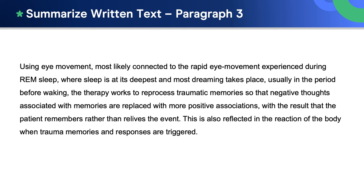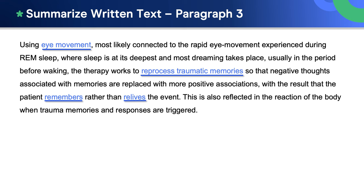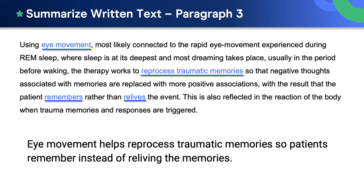These initial sentences are short and simple. Now let's do the third paragraph. Once again, we take the key words, this time from the third paragraph: eye movement, reprocess traumatic memories, remembers, and relives. And we use them to make a concise summary of the paragraph: eye movement helps reprocess traumatic memories so patients remember instead of reliving the memories. Notice how we need to make small changes to verb endings to ensure we're using the correct grammar — 'remembers' became 'remember' and 'relives' became 'reliving'.